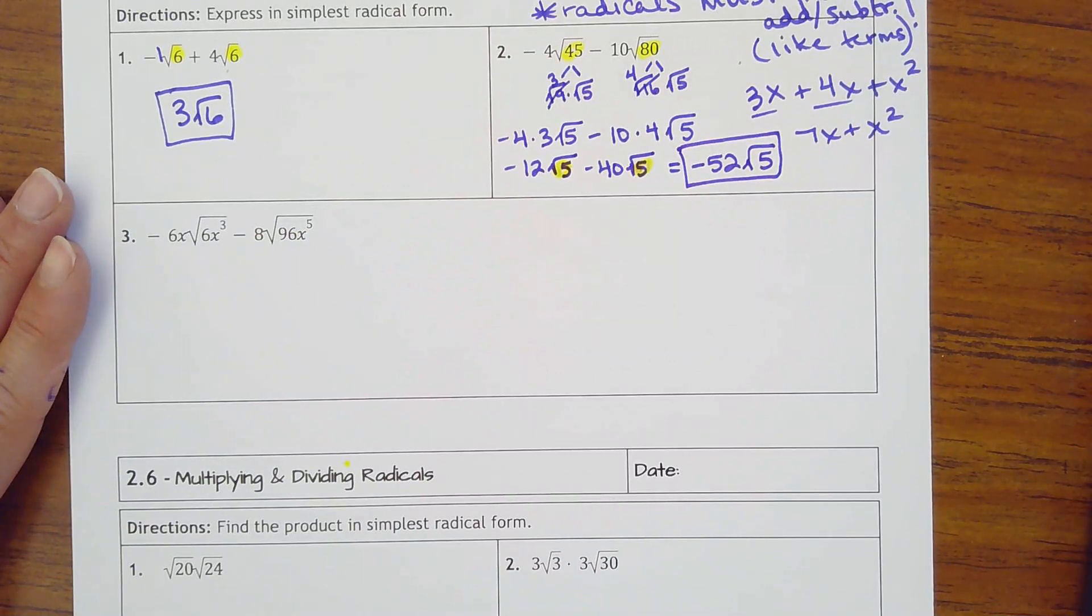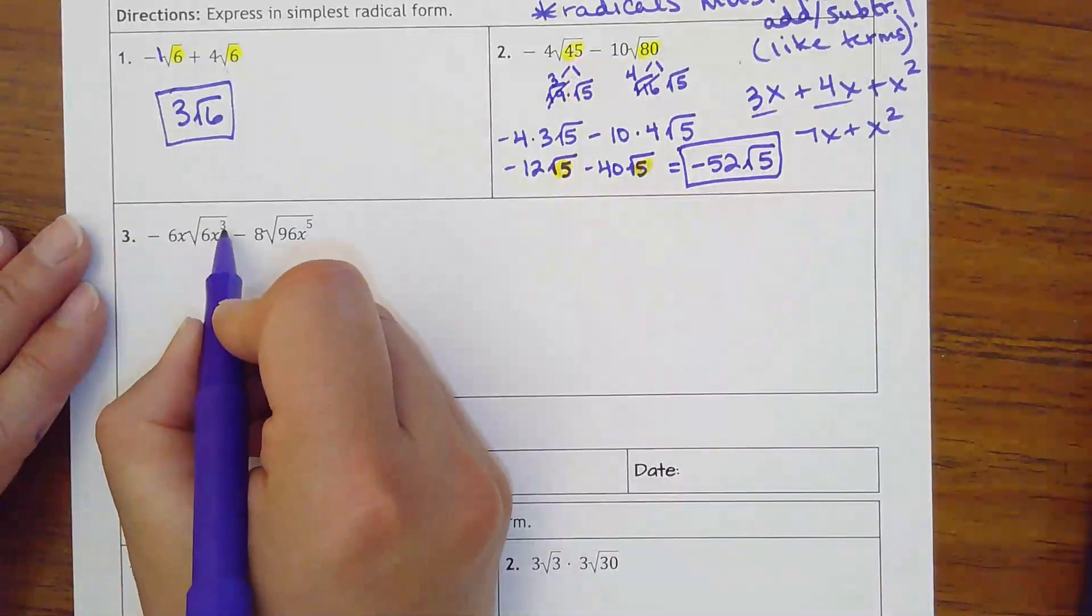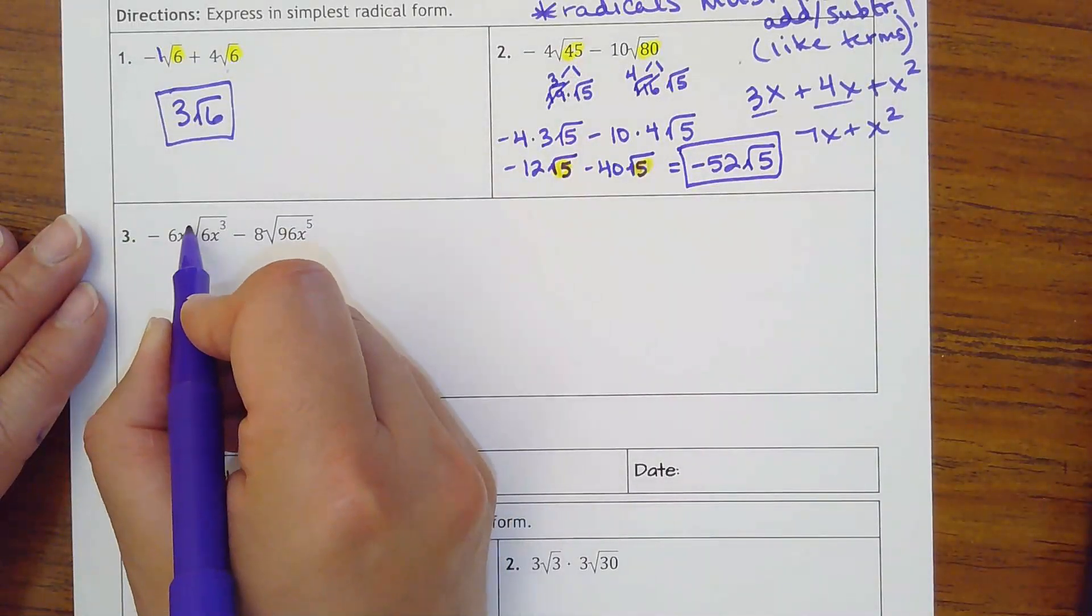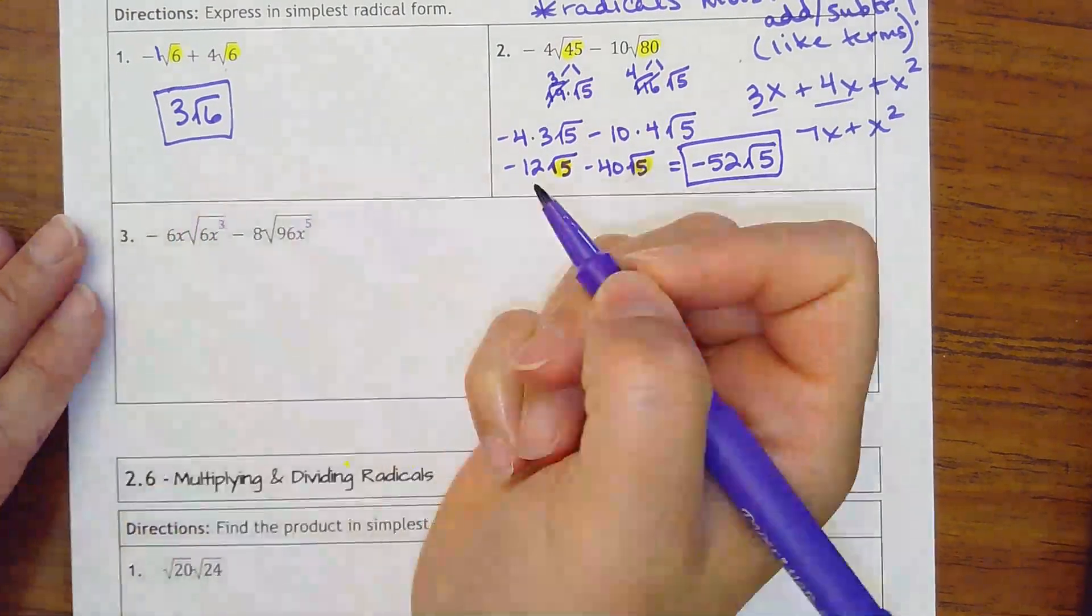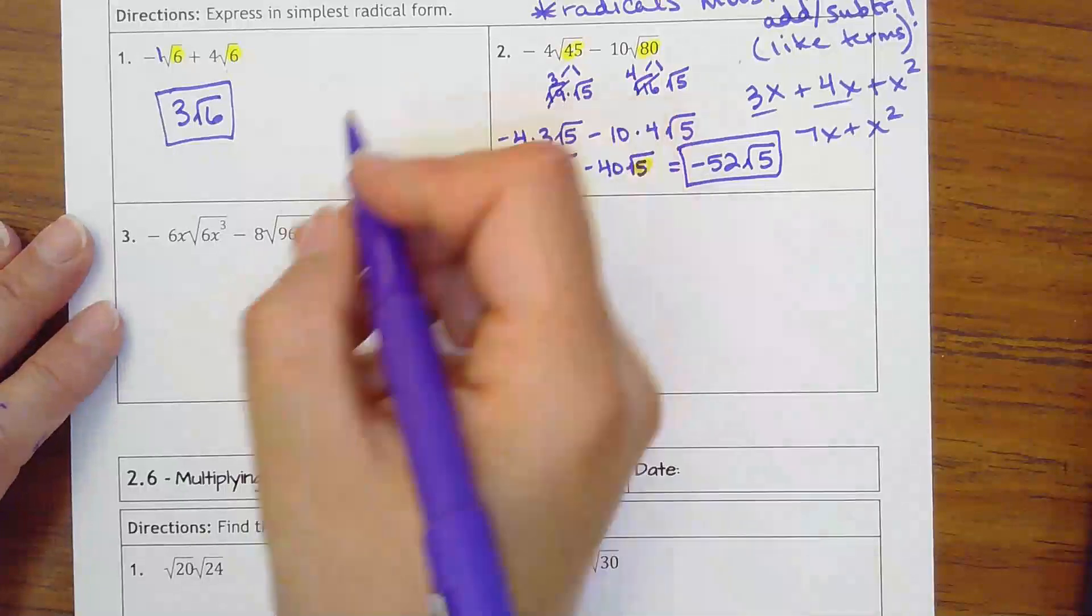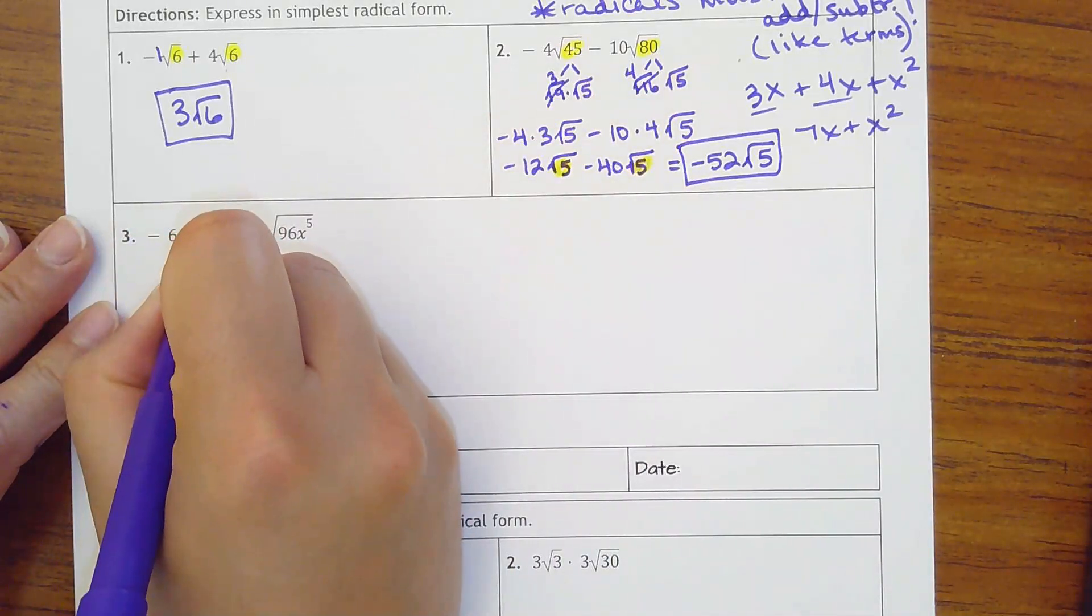The last one has some variables. Remember that the variable exponents need to match or be multiples of the index. These are square roots, so we need multiples of 2. Let's simplify this.